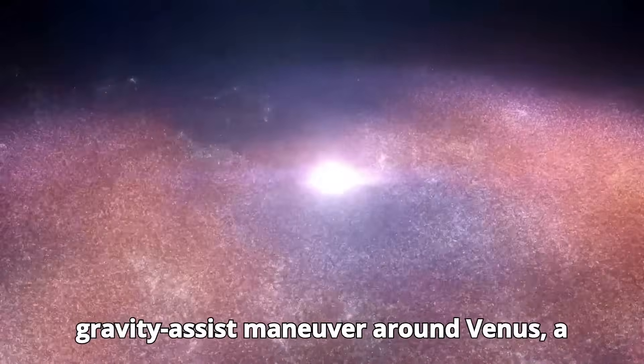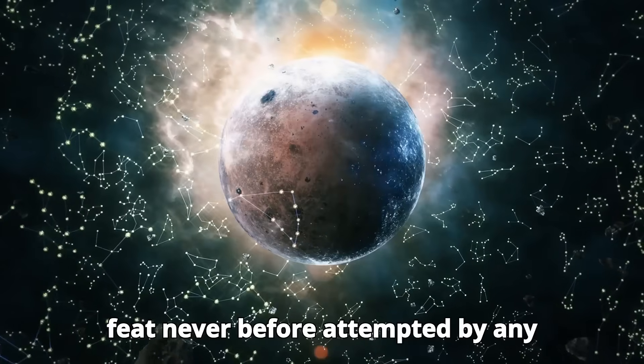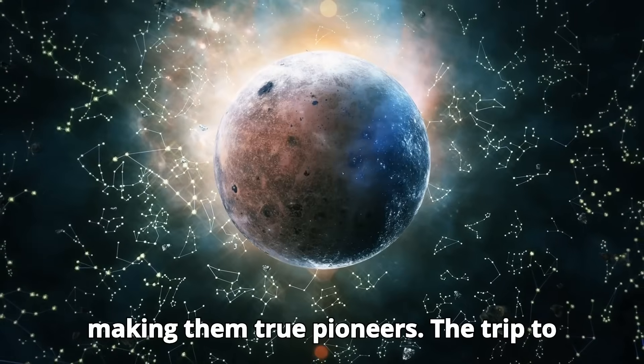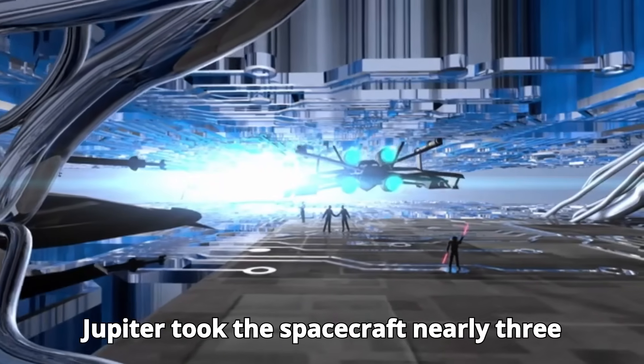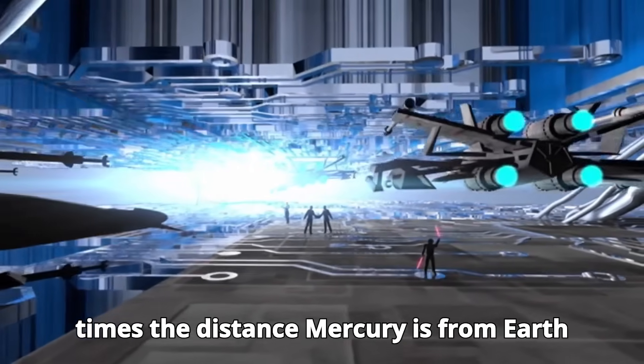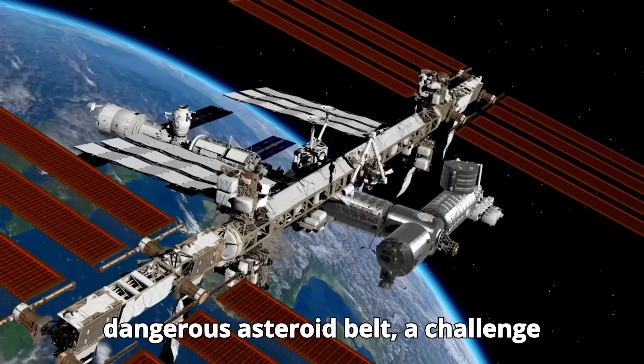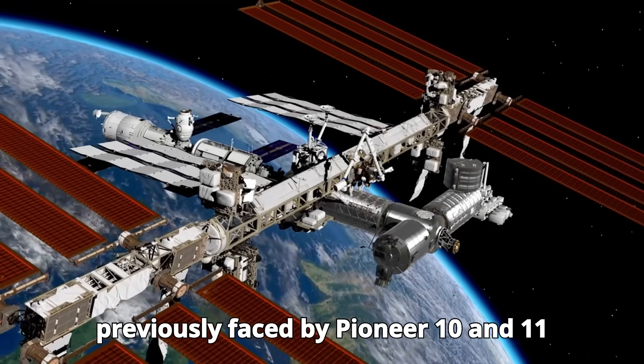The Explorer's journey began with a gravity-assist maneuver around Venus, a feat never before attempted by any spacecraft, on their way to Mercury, making them true pioneers. The trip to Jupiter took the spacecraft nearly three times the distance Mercury is from Earth and forced them to pass through the dangerous asteroid belt, a challenge previously faced by Pioneer 10 and 11 missions.